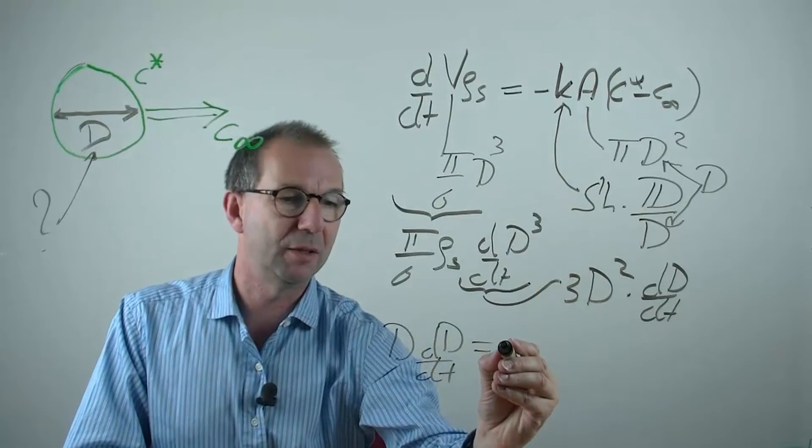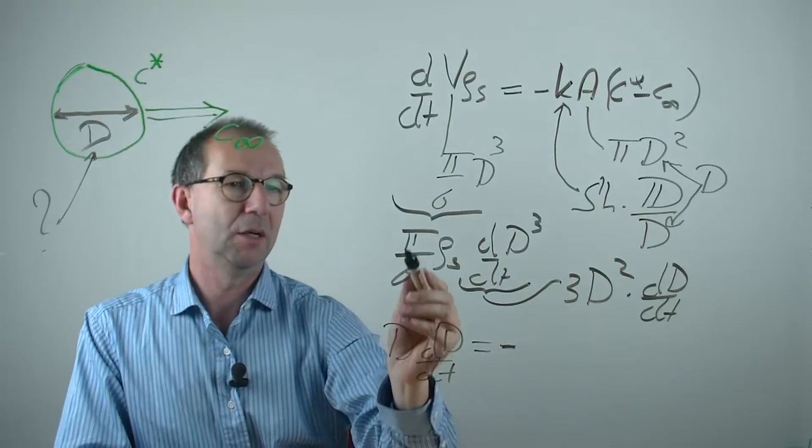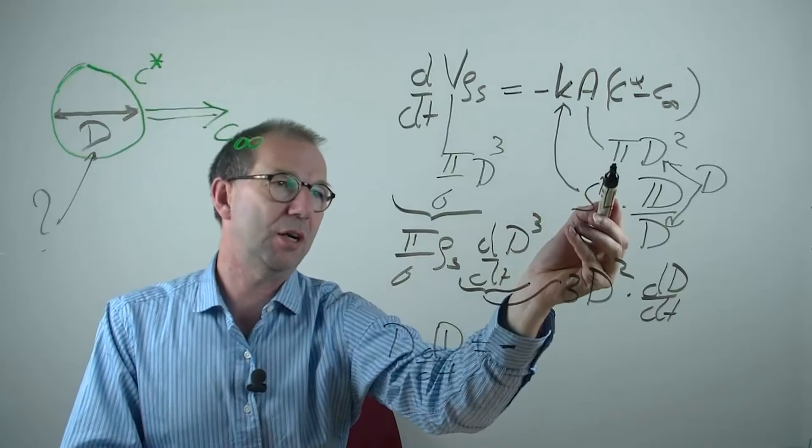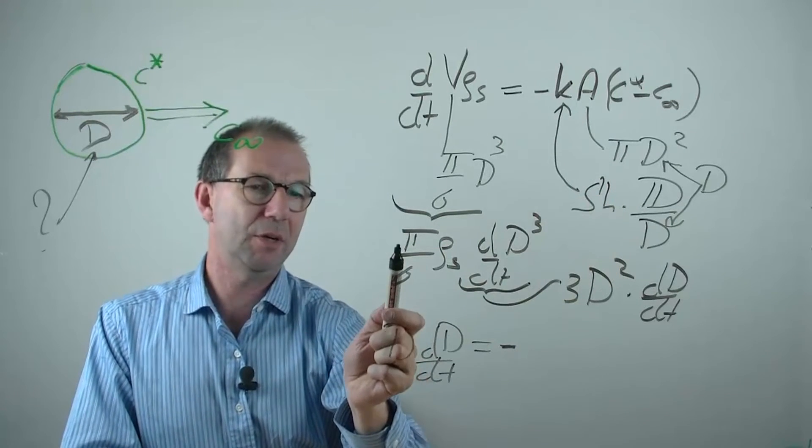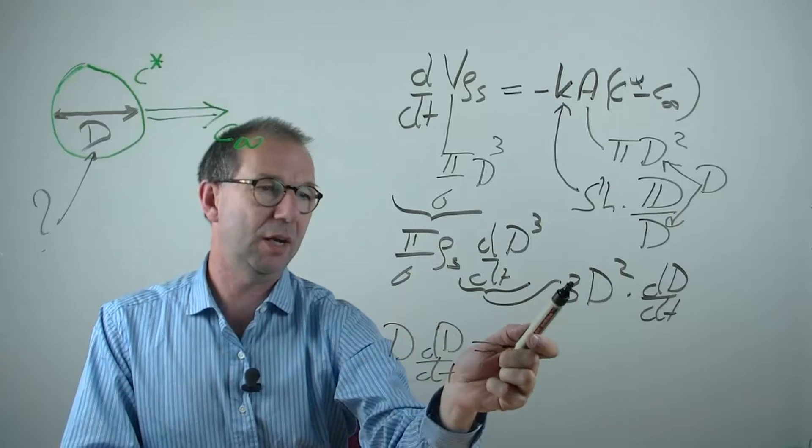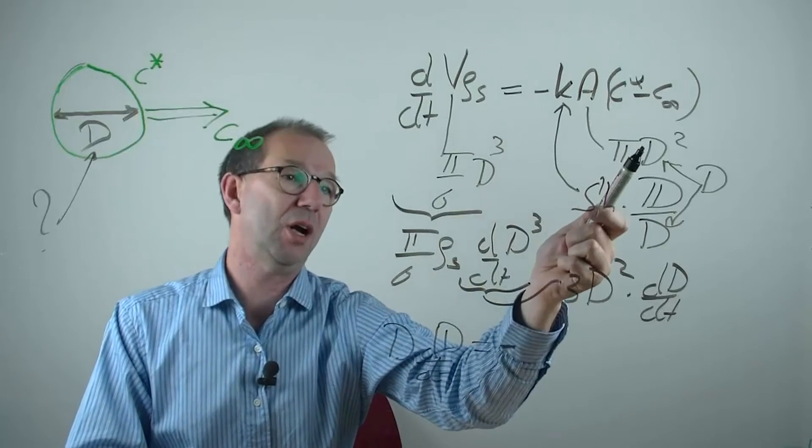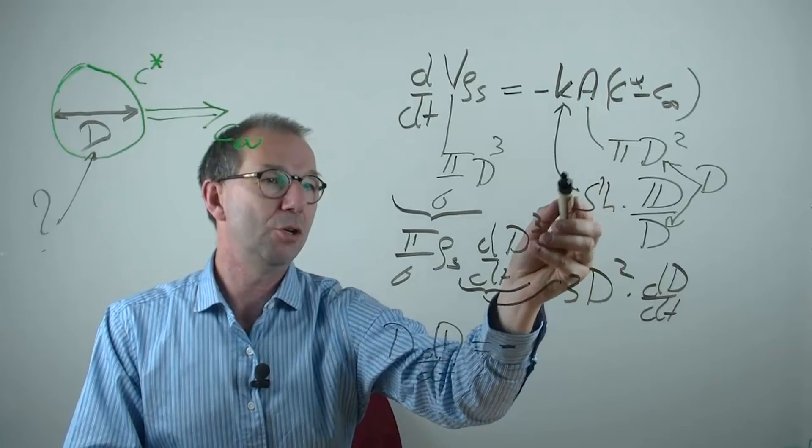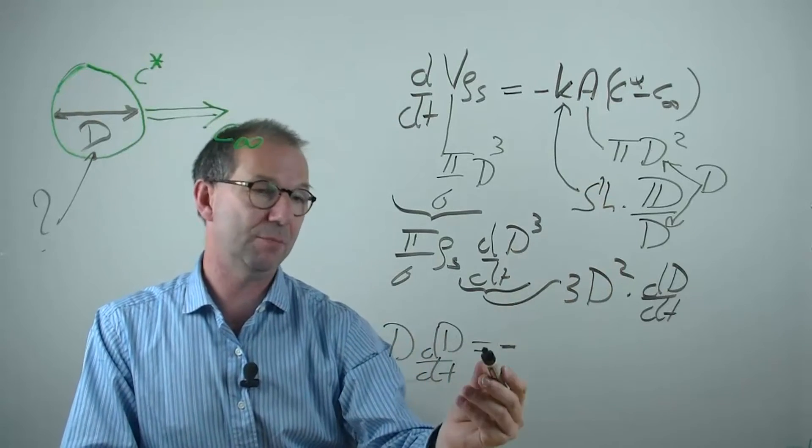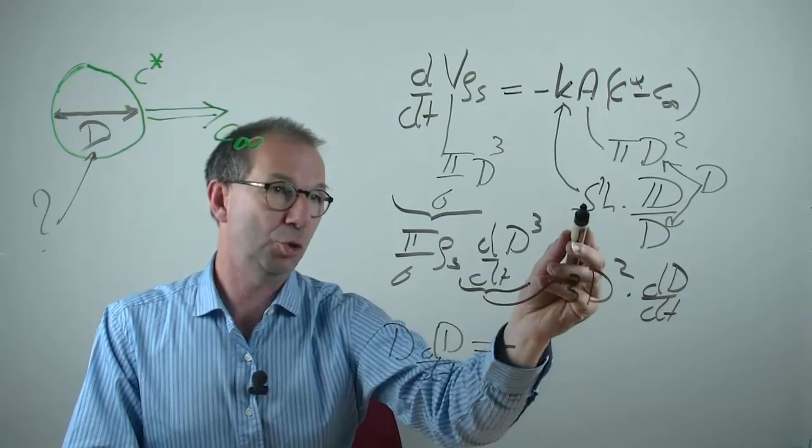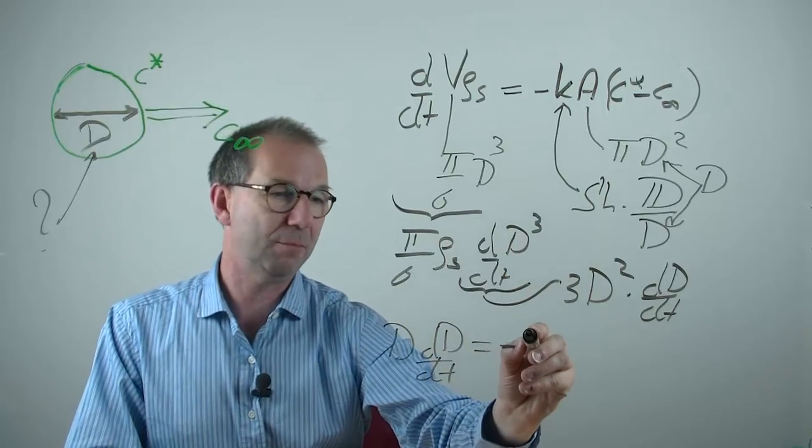Start with the minus sign. Then the pi's are out, because they are on both sides. Then there is 1 over 6 here and a 3, so there is a half on this side, move to the other side, give me a 2. Sherwood in the example that we did was also 2, 2 times the 2 coming from this side, gives me a 4.